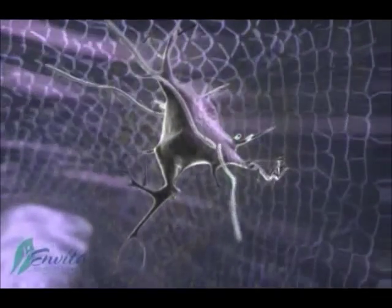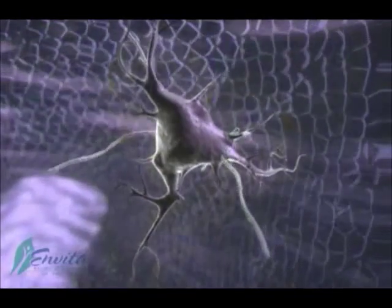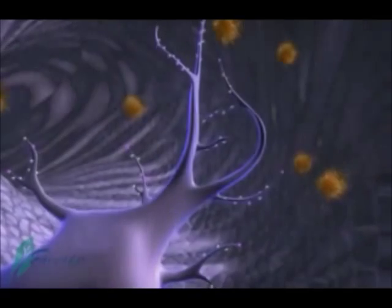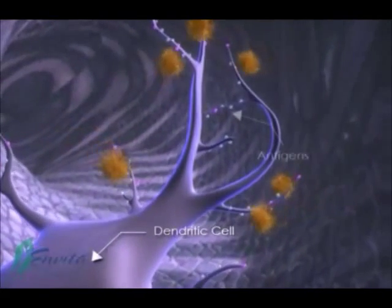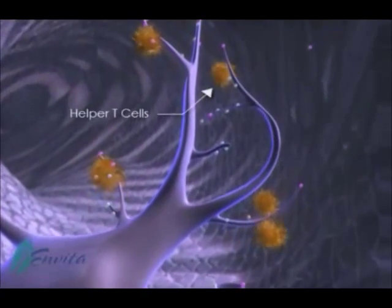Once the spirochete enters the human body, it comes into contact with the dendritic cell of the immune system. The spirochete rubs or displaces the antigens onto the dendritic cell. Then the dendritic cell begins to process the antigen of Lyme disease for the other parts of the immune system to recognize it. The helper T cells come along and pick up the processed antigen off of the dendritic cell.